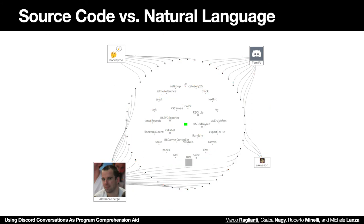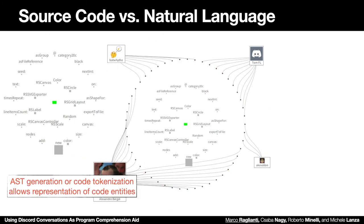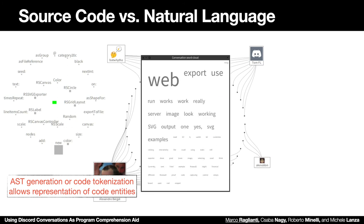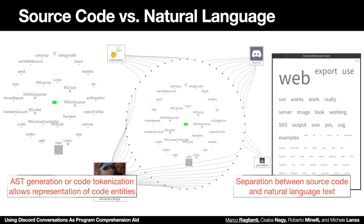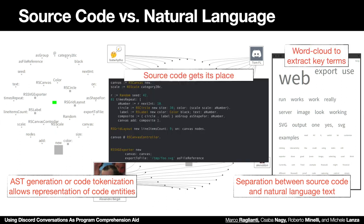We would like to keep separated source code and natural language. In particular, for source code we generate the abstract syntax tree, or at least we get a tokenization of the code. This allows us to represent code entities. To demonstrate our approach we treat natural language by extracting a conversation word cloud, keeping text in natural language separated from source code, and we extract key terms in the word cloud. In this way, source code gets its place in the conversation.